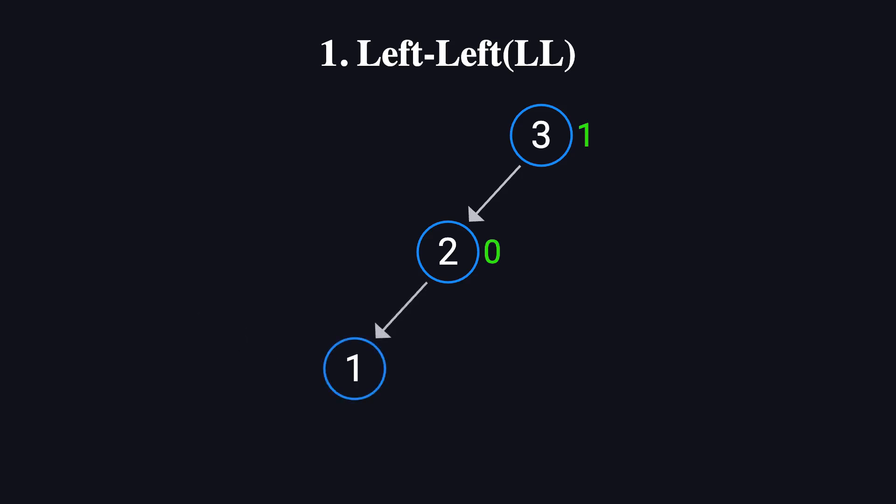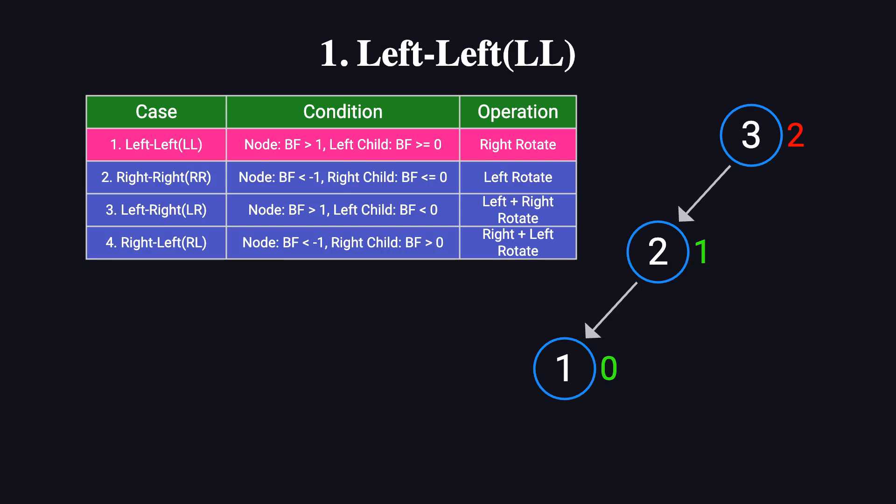Finally, we insert 1. Since 1 is less than 2, it becomes the left child of 2. At this point, node 1 has a balance factor of 0, node 2's balance factor becomes 1, and node 3's balance factor becomes 2. Since node 3's balance factor has exceeded 1, the tree is now unbalanced. Using our table, we identify this as an LL imbalance. This occurs when a node's balance factor is greater than 1, and its left child's balance factor is greater than or equal to 0.